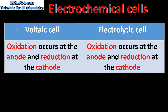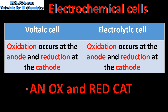Finally we look at the similarities between a voltaic cell and an electrolytic cell. Oxidation occurs at the anode and reduction occurs at the cathode — this is the same for both. An easy way to remember this is the phrase 'an ox and red cat': oxidation occurs at the anode and reduction occurs at the cathode.